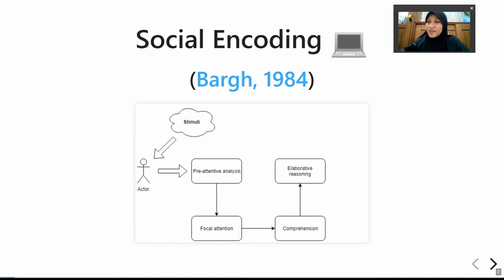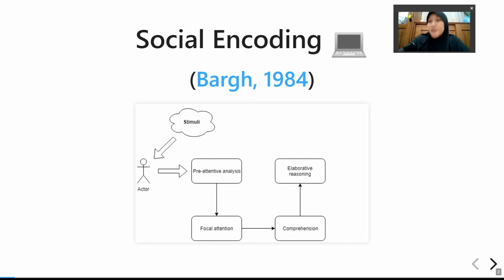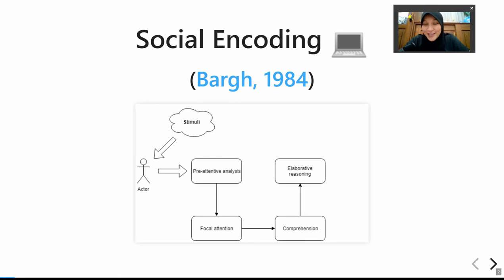When a certain stimulus catches our attention, the next process is called focal attention — this is where we put more attention to certain stimuli that captured our interest. We then process this information further by categorizing it into our memories, which is where social schemas come in. We try to categorize information to make it simpler before we put meaning to it.